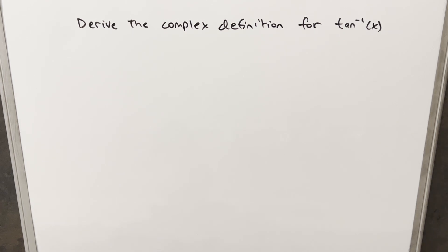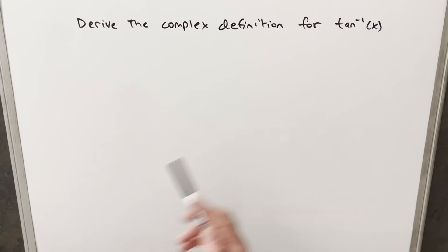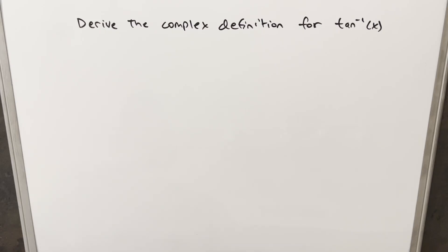We have here today a pretty interesting challenge. What I need to do is derive the complex definition for arctan of x. To get started, before we can even get to arctan, I think we need to look at what makes up tangent, which is just sine and cosine. For that, I'm going to need Euler's formula.